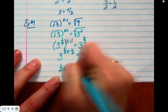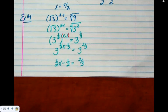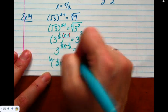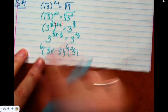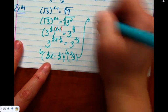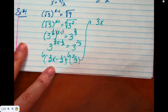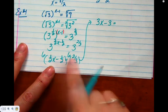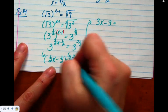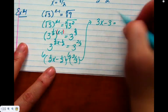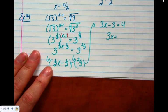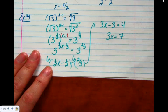Equate the exponents. 1/2 x - 1/2 = 2/3. If you don't like the fractions, what can you do at this point? Multiply by six. Six times 1/2 x is 3x. Six times negative 1/2 is -3. And six times 2/3 is 4. 3x - 3 = 4. 3x = 7. X equals 7/3.